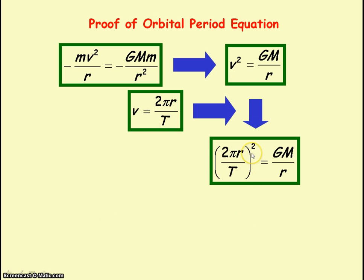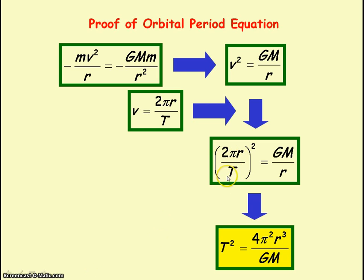If we times out the brackets, we're left with 4π squared r squared divided by t squared. And rearrange it to make t squared the subject, we get this. So we've timed both sides by t squared, so t squared comes to the other side of the equation. We've also timed both sides by r, so you get r squared times r, which gives you the r cubed, and the r disappears on this side. And then we've divided both sides by GM.